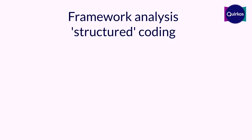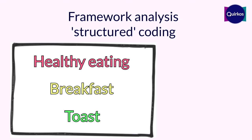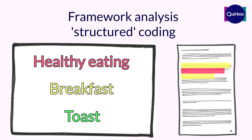The other method is called framework analysis, or structured coding, where you actually have a framework — a list of codes and themes beforehand — and what you're trying to do is match the data to the codes you've already identified. In practice, what most people do is a flexible combination of both: they have some idea of the things they want to find, but they're also open to new things, so if something surprising comes out of the data, they can create new codes and themes to capture that.